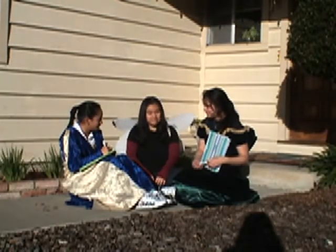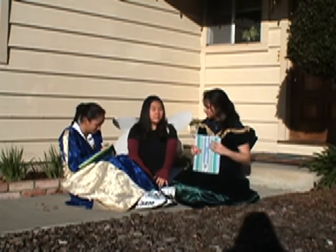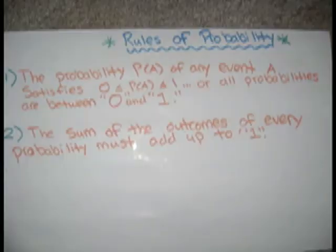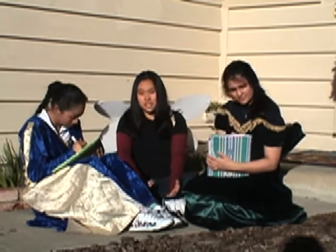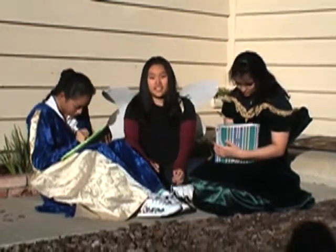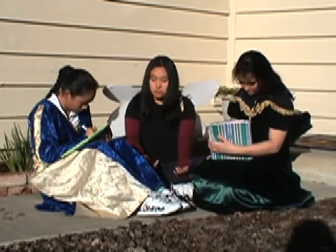Did you get all the terms? Yes. Excellent! Now there are two rules of probability that you will need to know. The first rule is when the probability of event A satisfies 0 ≤ P(A) ≤ 1, which basically means all probabilities are between 0 and 1. The second rule is the sum of the outcomes of every probability must add up to 1.